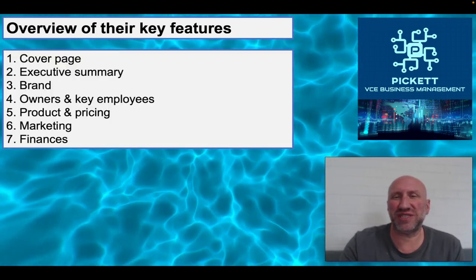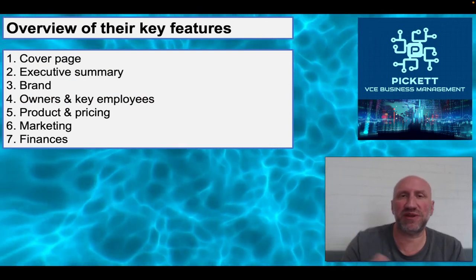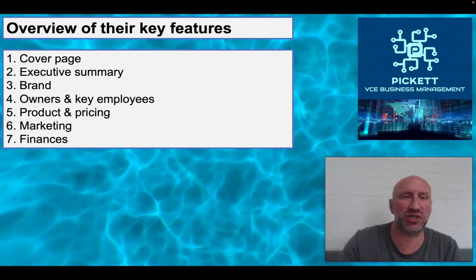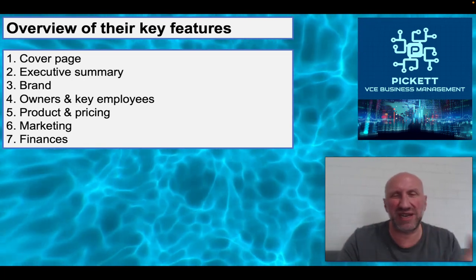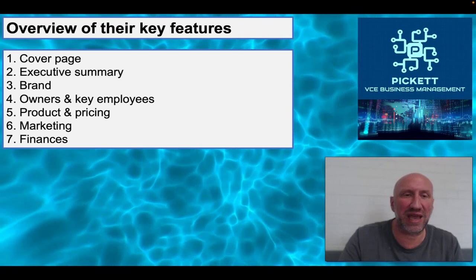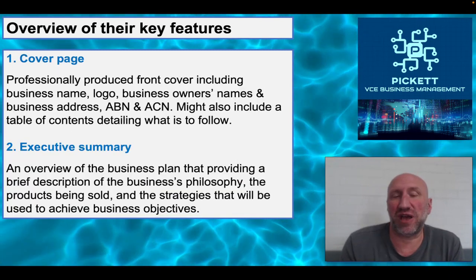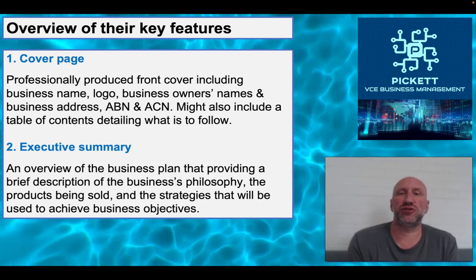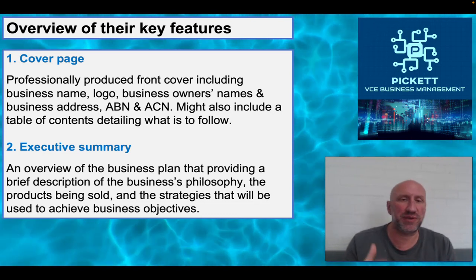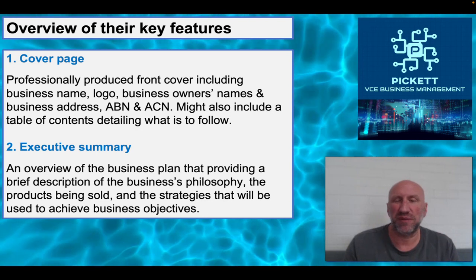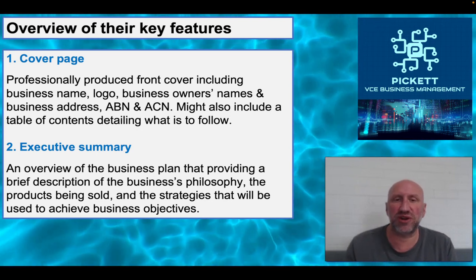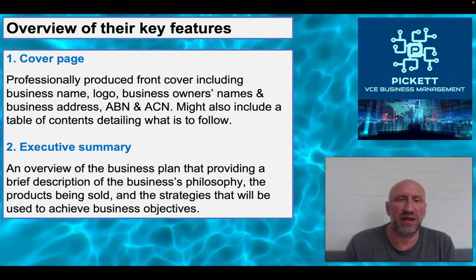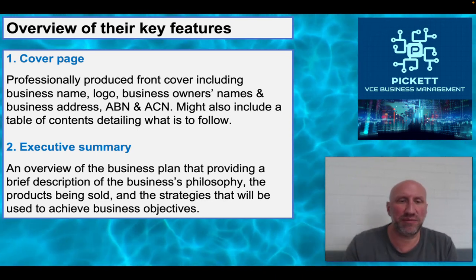Simplifying all of that, we can break the key features down into seven key areas. First, a cover page — this is a professional document, so you want a professionally produced front cover, probably including your business name and logo, the owner's names and address, your Australian Business Number, your ACN, and you might have the table of contents sitting behind it as well.